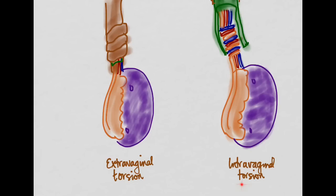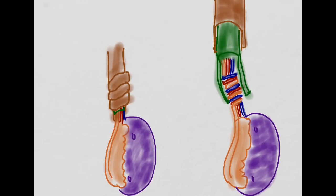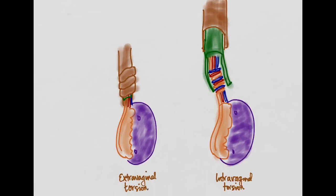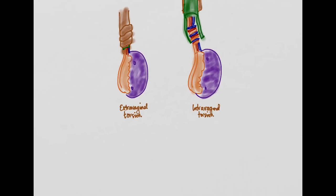Now you have the intravaginal one. You can see within the spermatic cord, it might look okay outside of it, but within it we have twisting of these vital structures: the artery, the vein, and the vas. And so this is our intravaginal torsion.